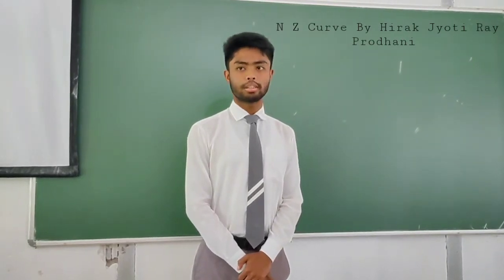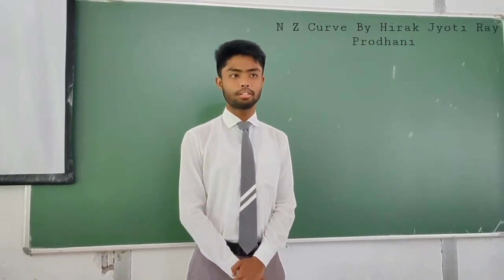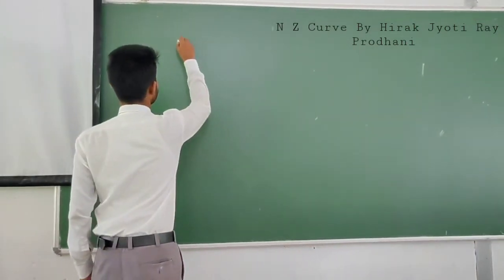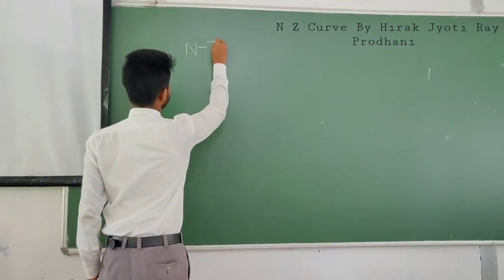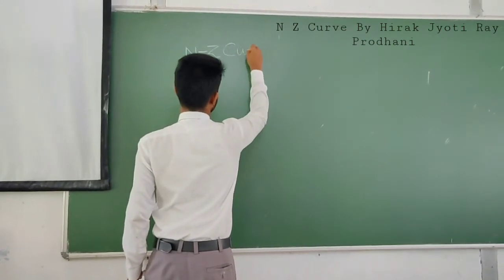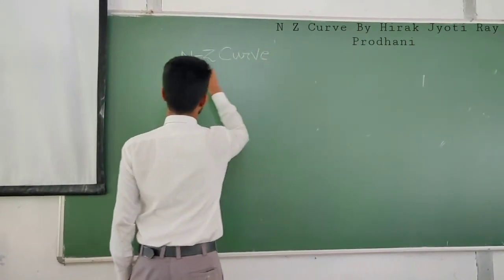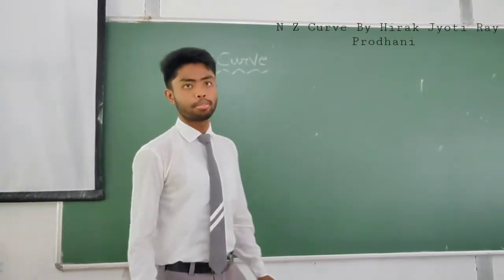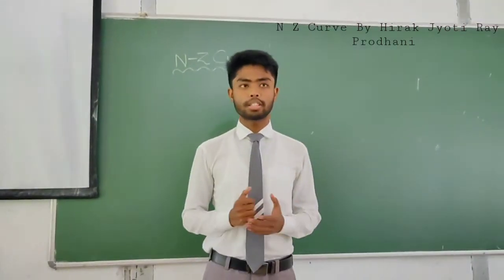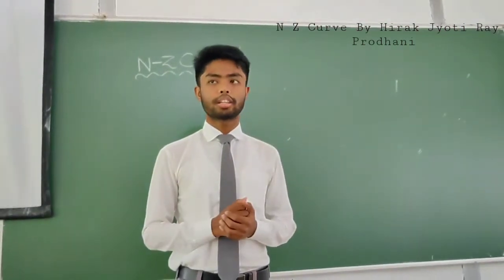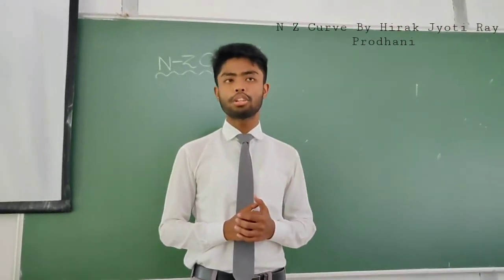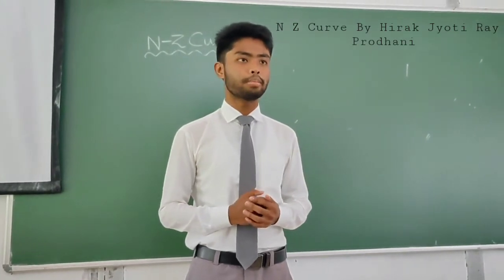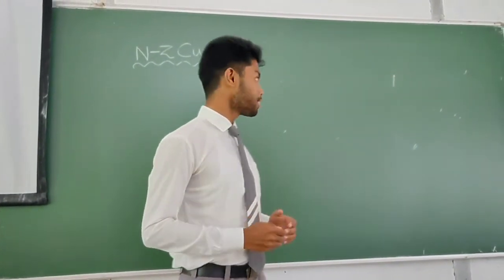Good morning everyone. Myself Ravjithi Ravjani, and today I am explaining about the stability curve. So basically whenever we plot neutron number versus proton number on a graph for stable nuclei, we find a curve, and this curve is called the stability curve. So first of all we have plotted the stability curve.